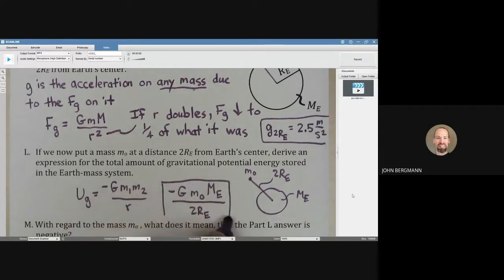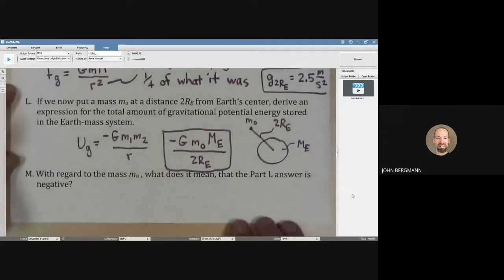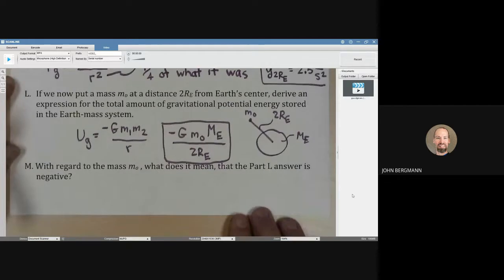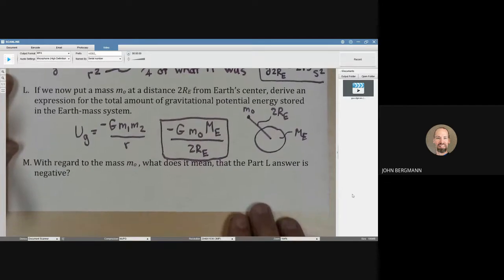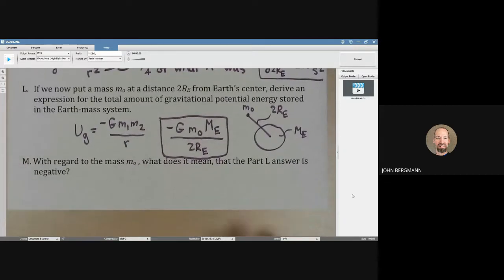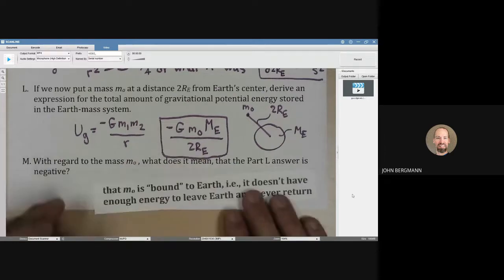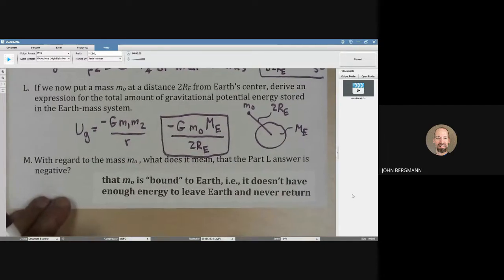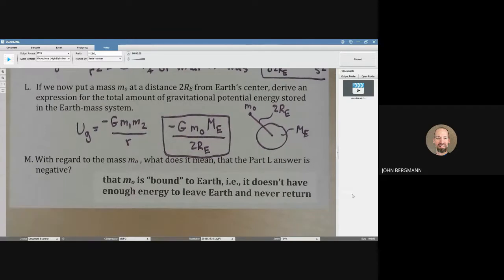And yes, it has to be negative. We have to put that negative sign in there. Lastly, with regard to the mass M0, what does it mean that the part L answer is negative? What that means is that M0 is bound to Earth. And when we say bound, we mean it doesn't have enough energy to leave and never come back. It's bound. It's stuck.